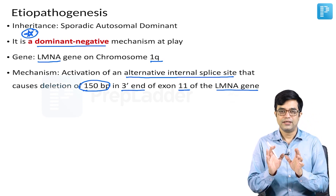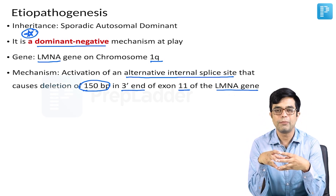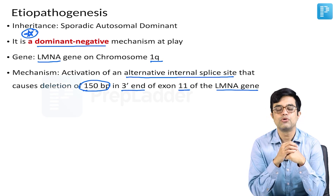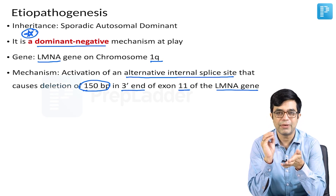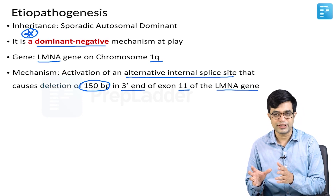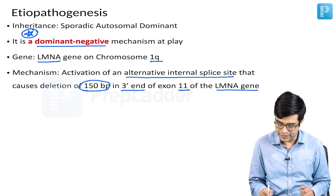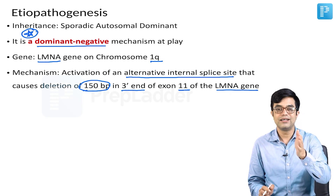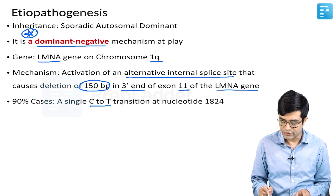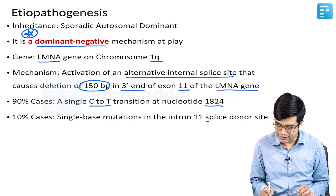Technical and tricky, yes — I will try to simplify it. What happens is there is a splicing site which is normally inactive or not very prominent in normal individuals. In patients with progeria, this splicing mechanism becomes overly active, and when it does, during the process of mRNA formation, it causes deletion of 150 base pairs and interferes with the normal translation of the LMNA gene. In 90% of cases, it occurs due to a single cytosine to thymidine transition at nucleotide 1824. In 10% of cases, there is a single base mutation in the intron 11 splice donor site.